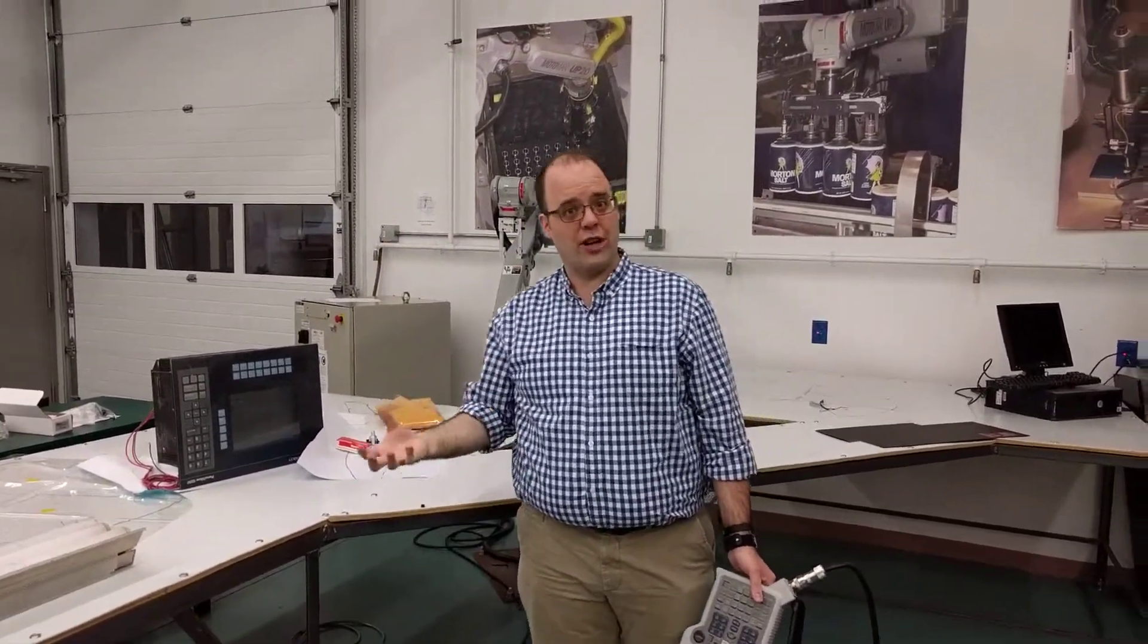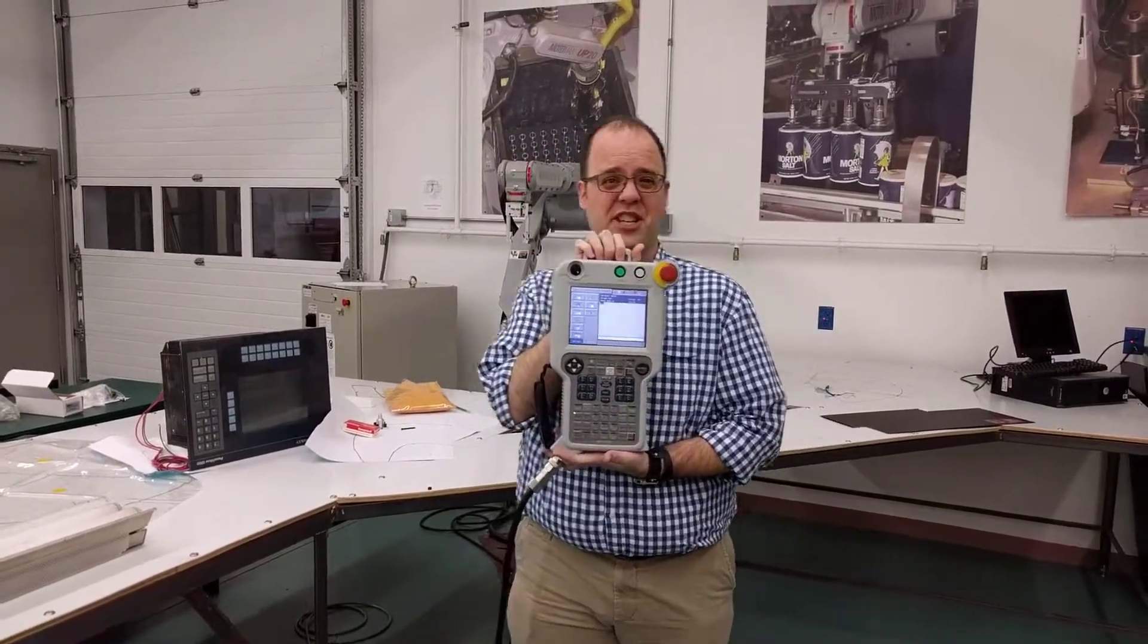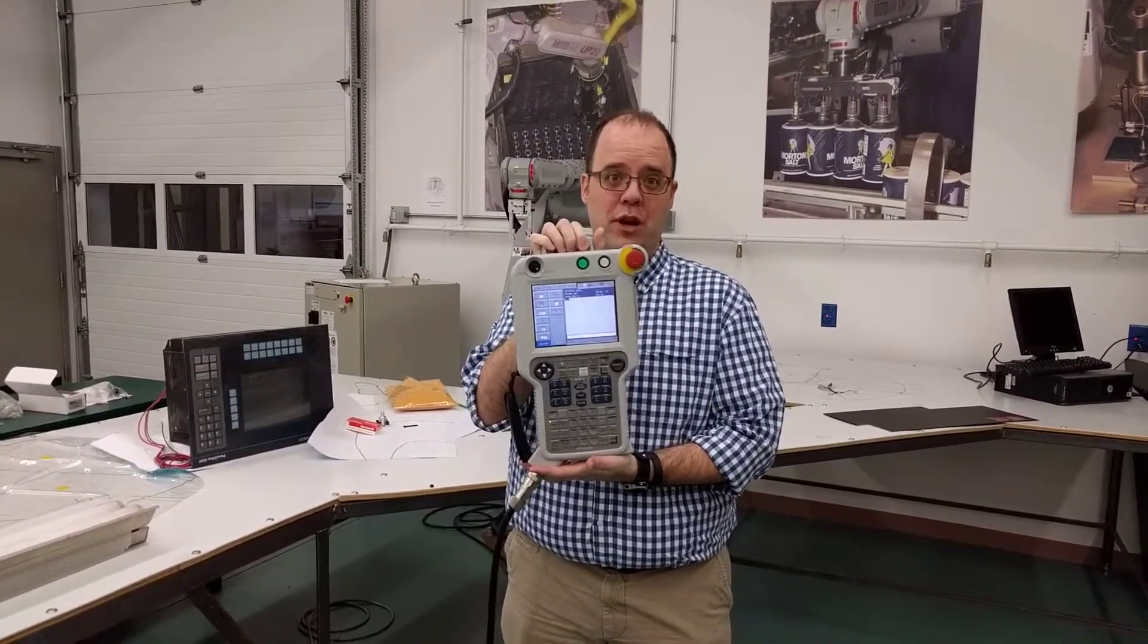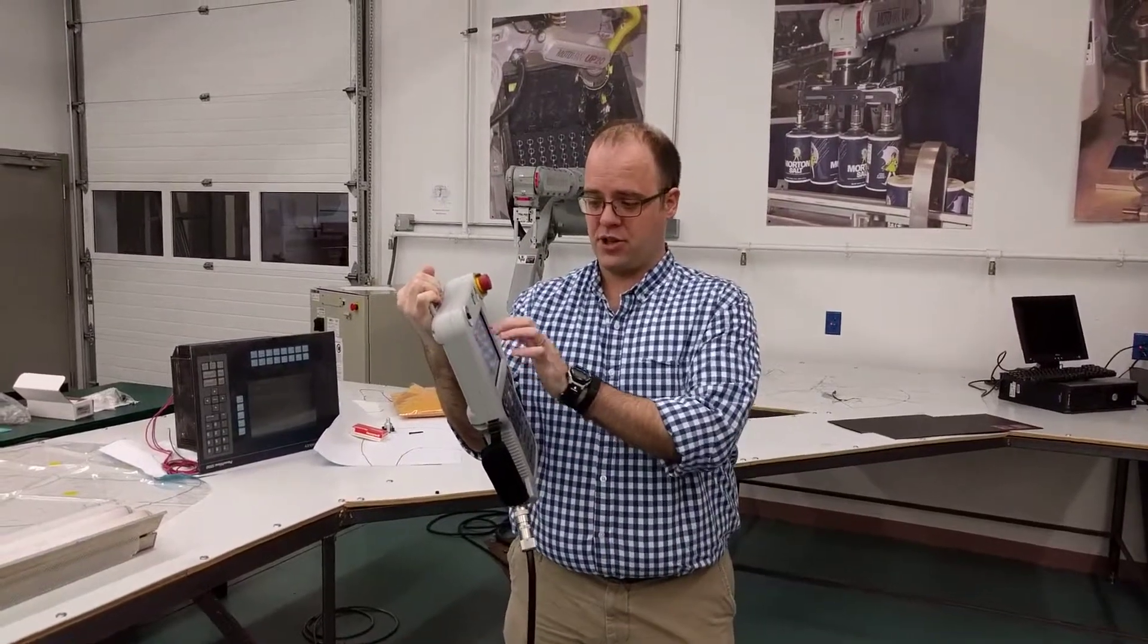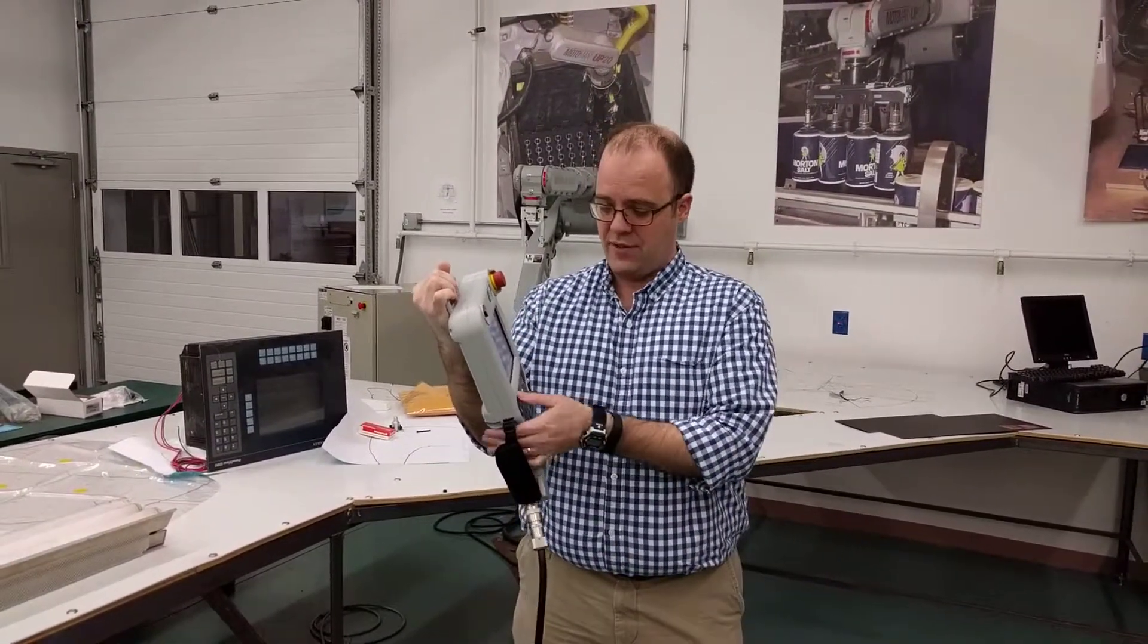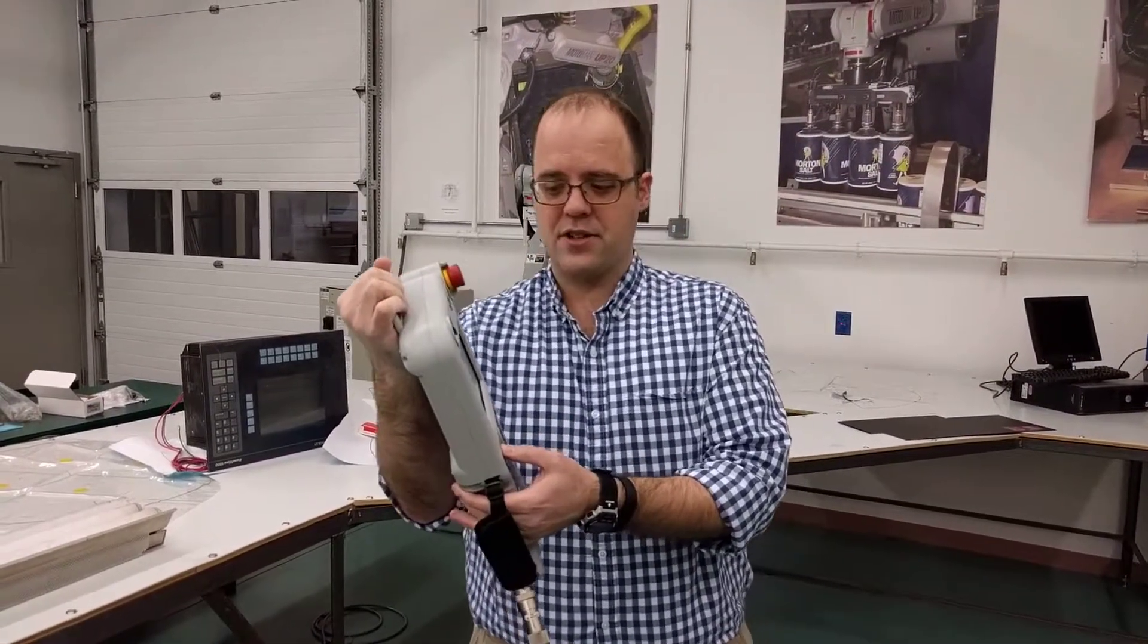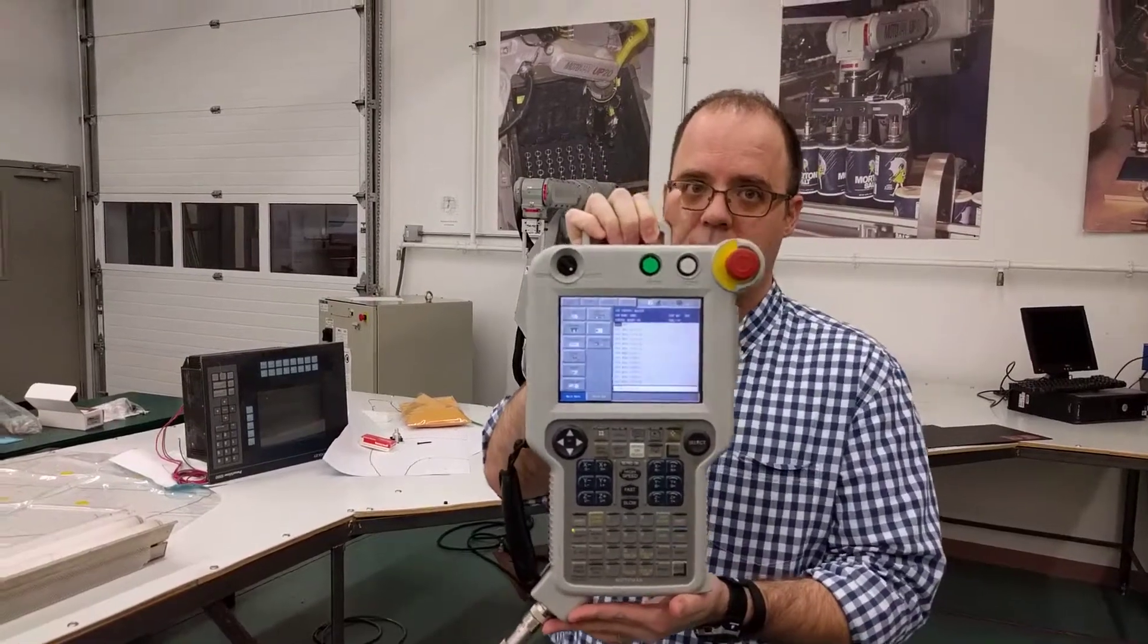How this robot operates is using something called a teach pendant machine. This looks like and very much is like a giant video game controller. You have buttons, this is a touch screen that I can touch to bring things up, and even if you look at the programming, you'll see lines of motion.